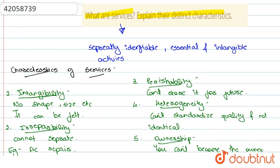So let us just revise this quickly. What is services? Which are separately identifiable, essential, intangible activities. Characteristics are intangibility, inseparability, perishability, heterogeneity and ownership.